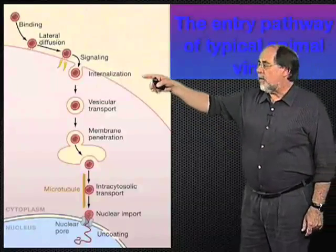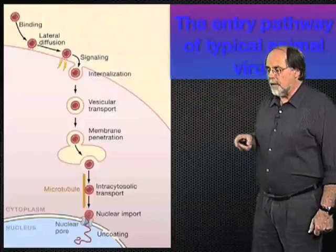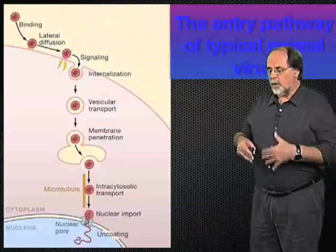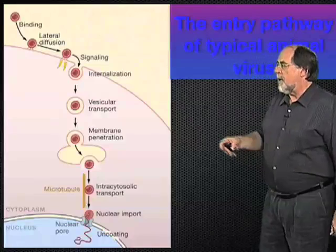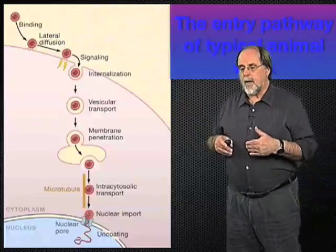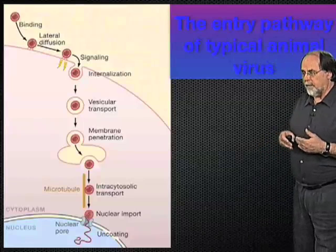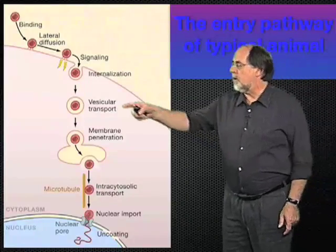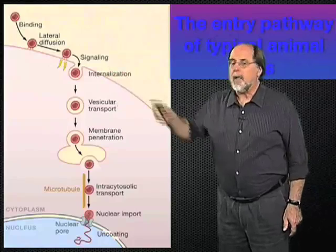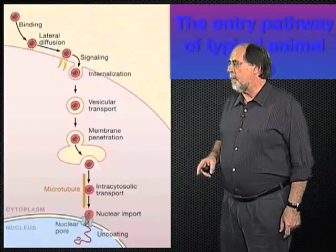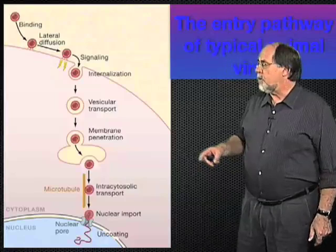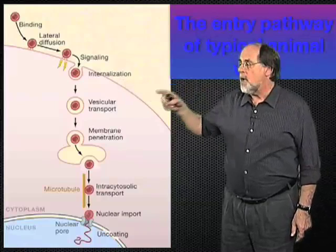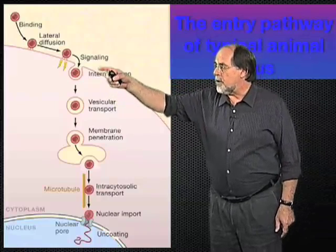During this time, the virus induces signals by activating the cell's own signaling pathways, and in this way the virus prepares the cell for the invasion. One of the things that then typically happens is that the viral particle is internalized by different mechanisms of endocytosis. There are some virus families able to penetrate straight through the plasma membrane without endocytosis, but the majority are endocytosed first.